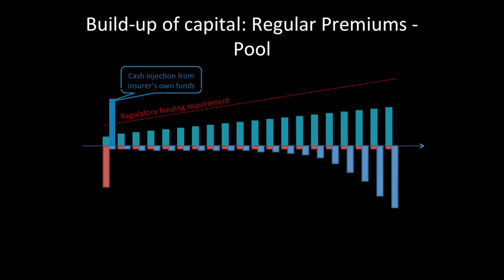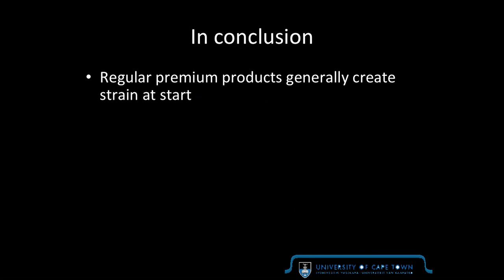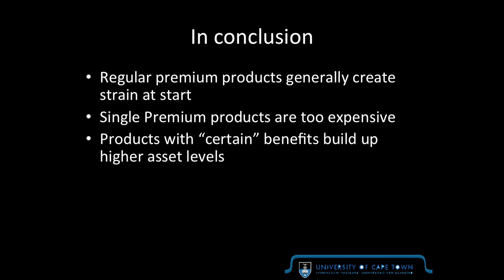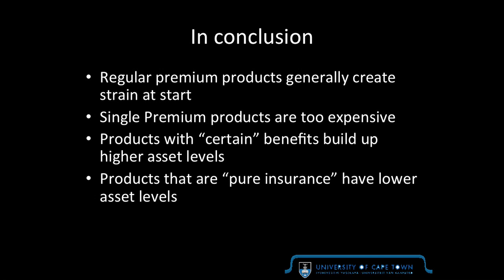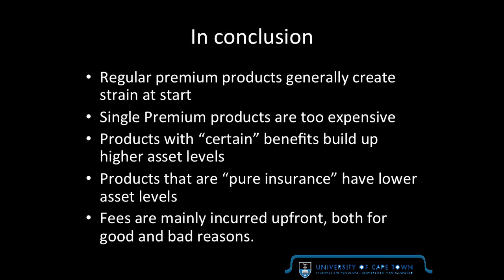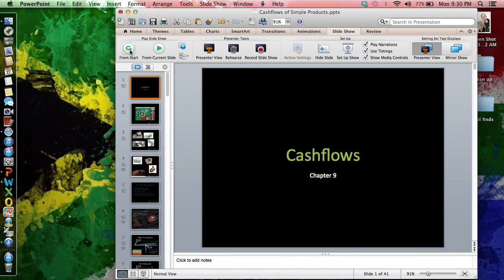This is how general fund would be. This is important when we come to the discontinuance, this build-up of that. Regular premium products generally create strain at start, single premium products are too expensive, products with certain benefits build up higher asset levels, and products that are pure insurance have lower asset levels. Fees are mainly incurred upfront, but for good and bad reasons. And yeah, that's cash flows.